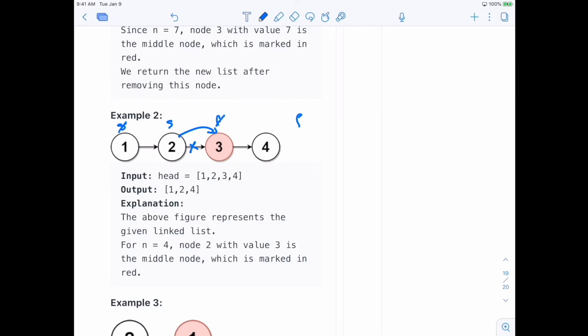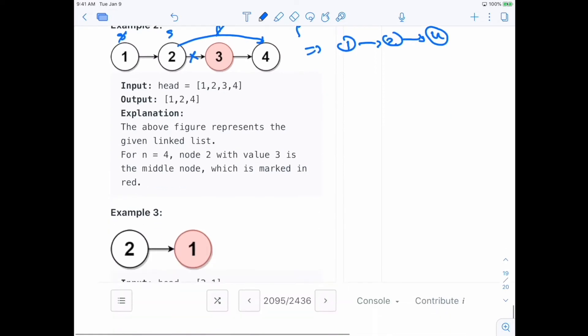So now we can set our pointer like this. Sorry, not like that, it's next dot next, so it would be like this. And with this we will end up with one, two, four.